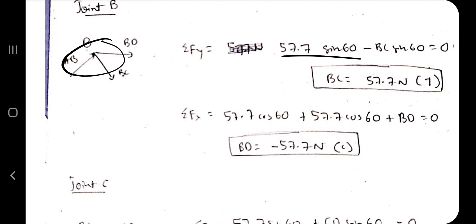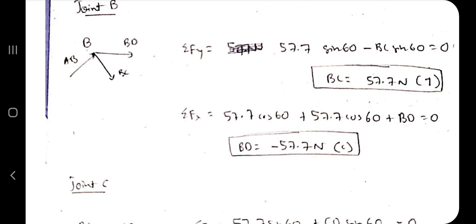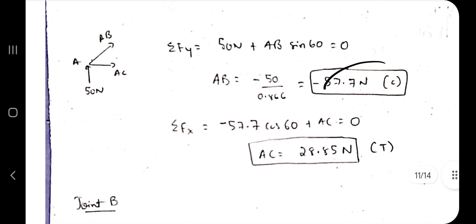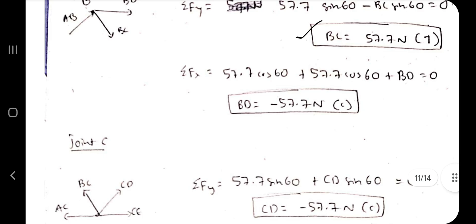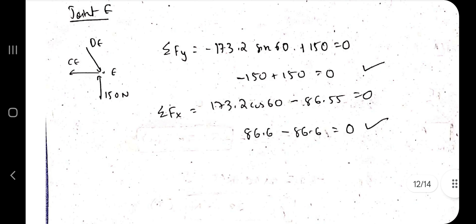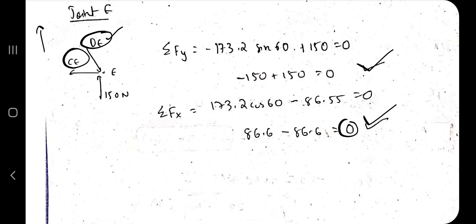The same process is applied for joints B, C, and D, considering all connected members and their angles. The values of BC and BD are found for joint B. For joint E, since we already have the forces from previous joints, we just verify/confirm — the result should come out as zero, confirming consistency. The values highlighted in squares are the final answers for each member force. That's all for the method of joints.